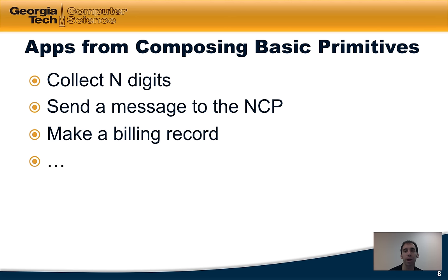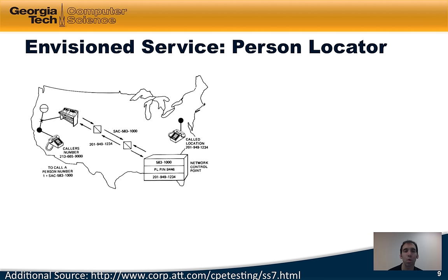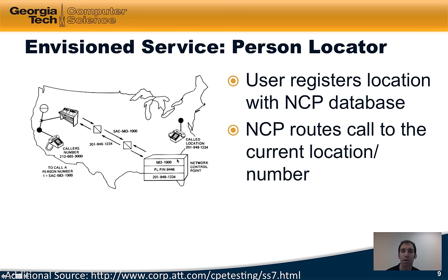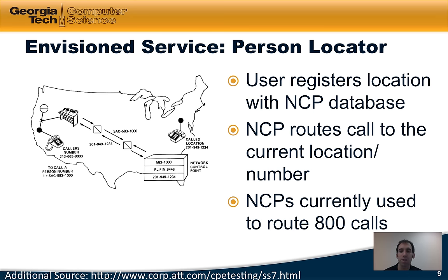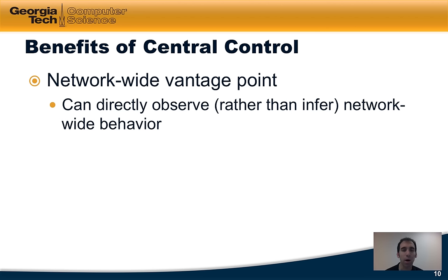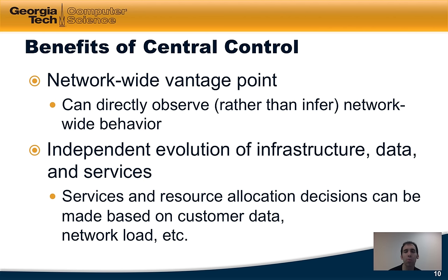The NCP architecture exposed basic primitives such as collecting digits from a number, sending and receiving messages, and making billing records, allowing more complicated applications to be built on top. One envisioned service was a person locator, where a user registers their location with the NCP database, and calls to a generic number are routed to wherever the user happens to be. NCPs are currently used to route 800 calls in a similar fashion. Central control allows operators to directly observe rather than infer network-wide behavior, and to evolve infrastructure, data, and services independently.